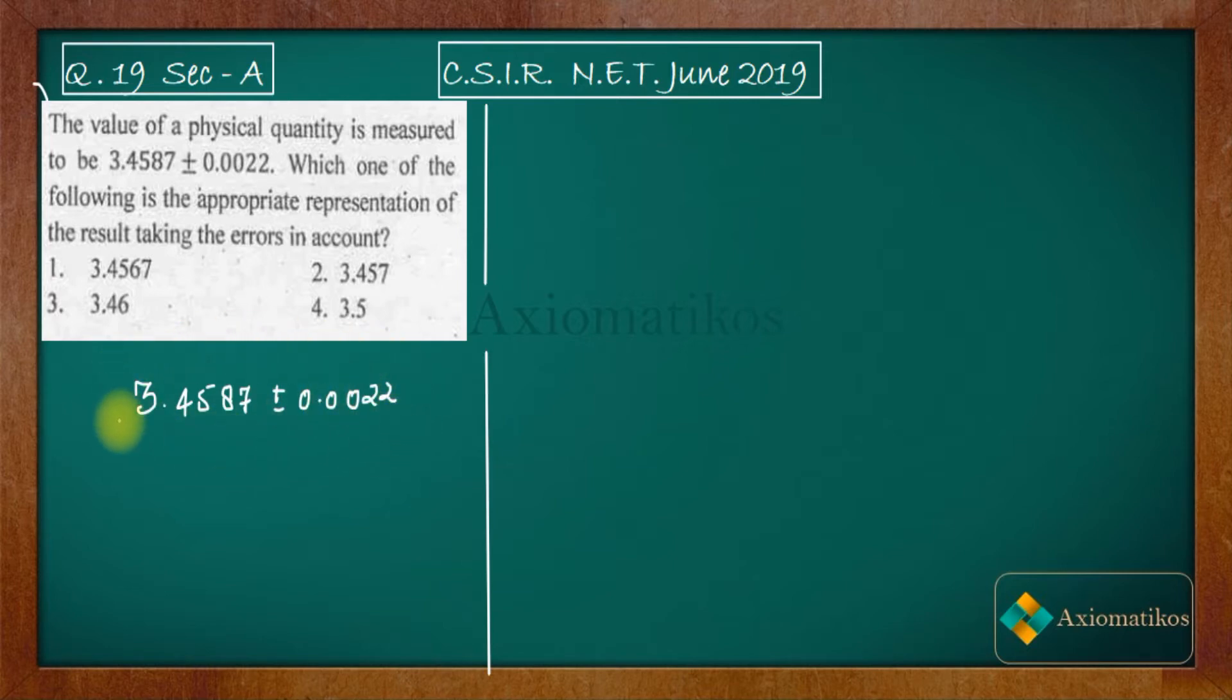What is the meaning of this statement? It means that let's say this is your number line and 3.4587 is somewhere here. Now if you will add 0.0022 to this number 3.4587, what will happen? You will get this number 3.4609.